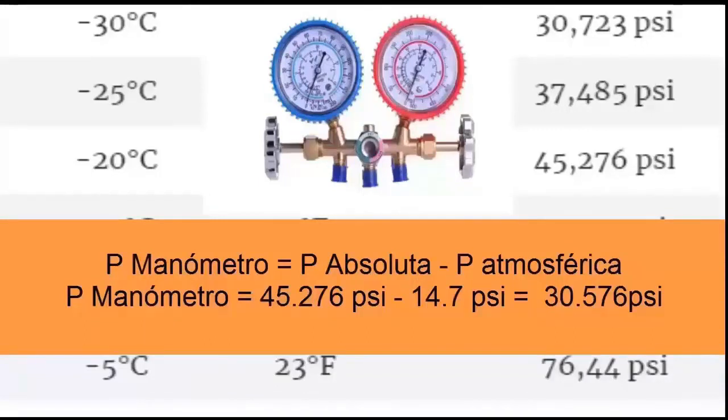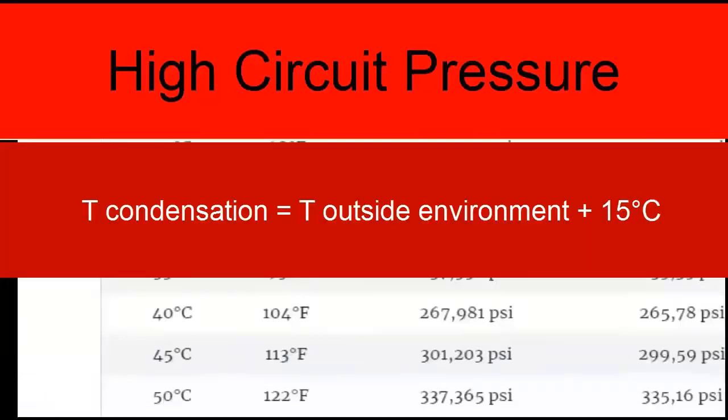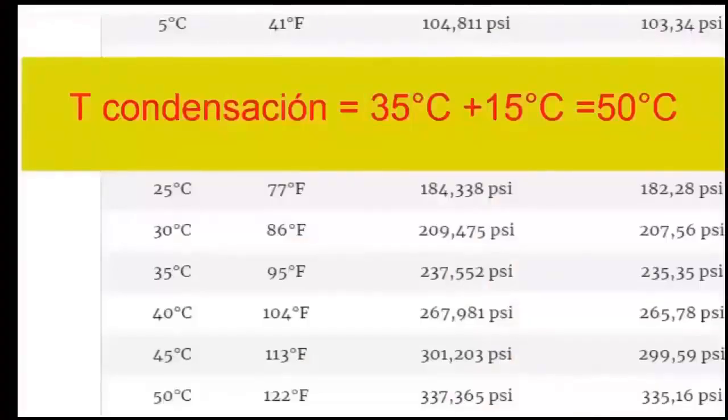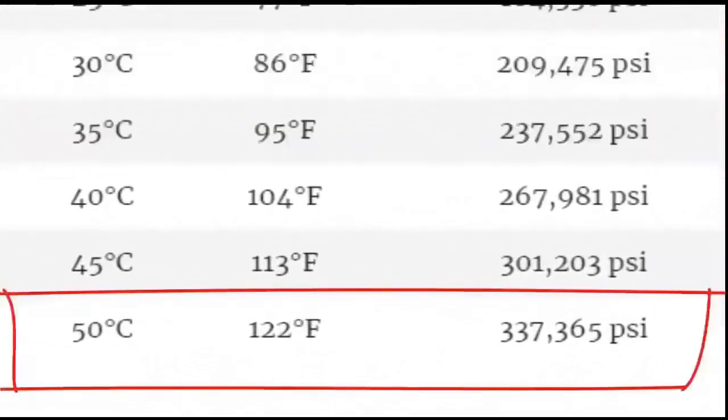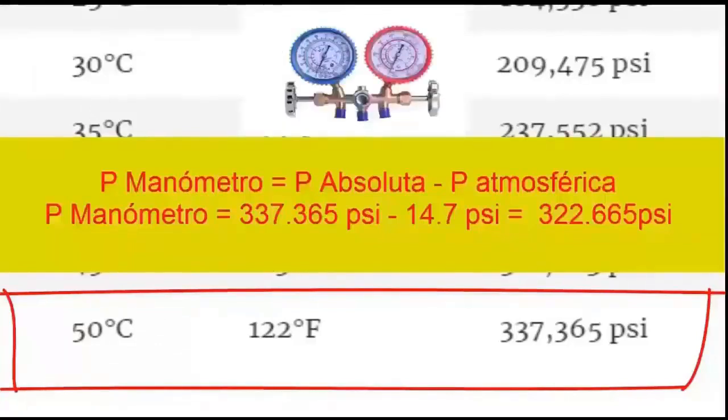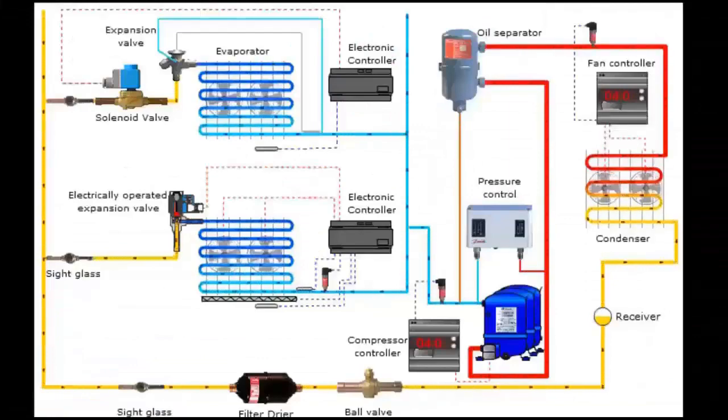To know the high pressure, simply use the ambient temperature increased by 15 degrees Celsius and look up the pressure value in the table. For an ambient temperature of 35 degrees Celsius, we increase 15 degrees to obtain a value of 50 degrees Celsius. Here is a 337.365 psi absolute pressure. To know the high or condenser pressure that the manometer would mark, we subtract the atmospheric pressure from the table value. 337.365 psi minus 14.7 psi is obtained, resulting in a gauge pressure value of 322.665 psi. Now let's see the parts of this cold room.